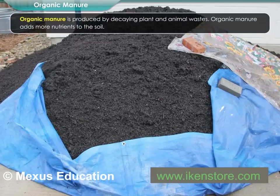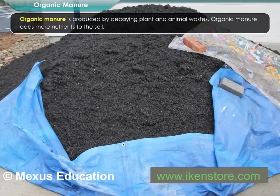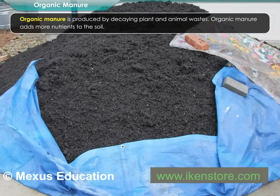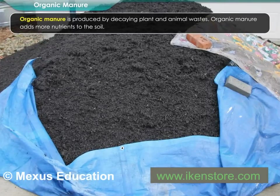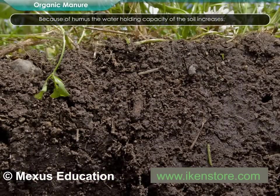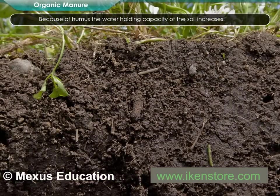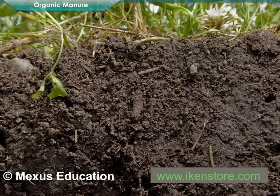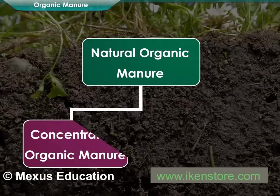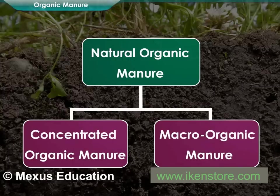Organic manure is produced by decaying plant and animal wastes, and it adds more nutrients to the soil. Because of humus, the water-holding capacity of the soil increases. Natural organic manures are generally divided into two types: concentrated organic manures and macro organic manures.